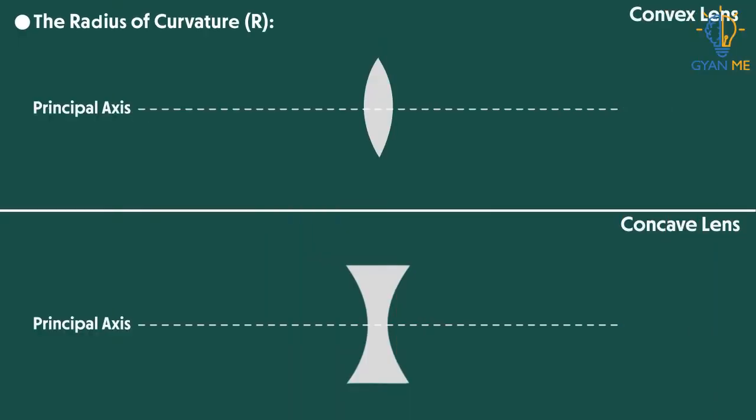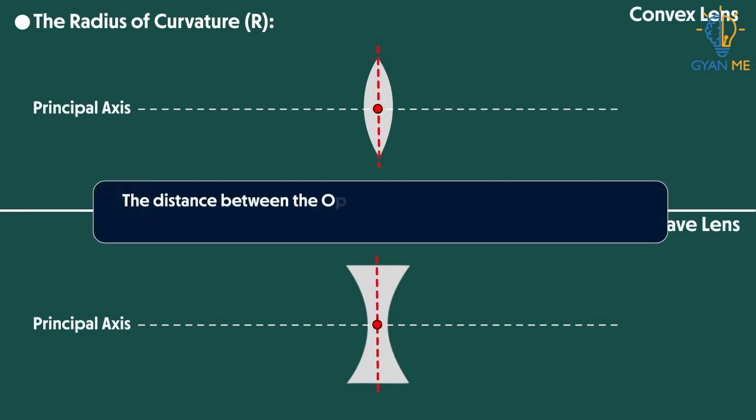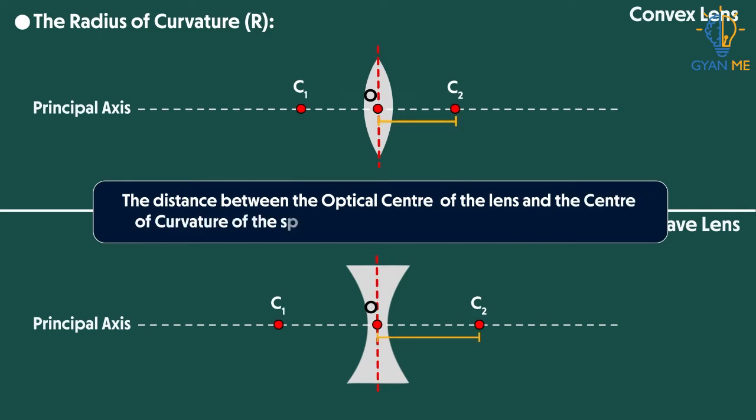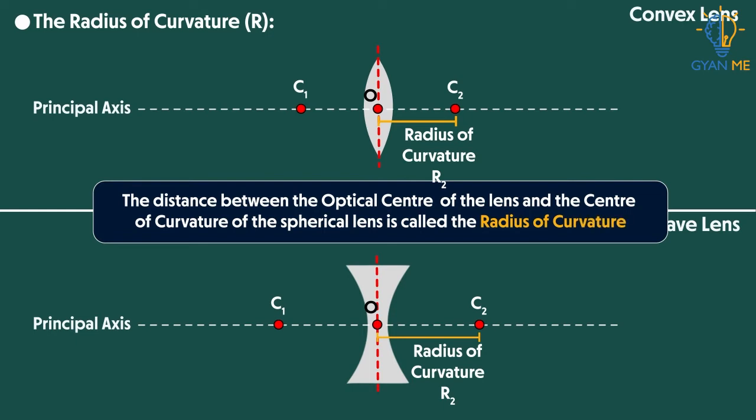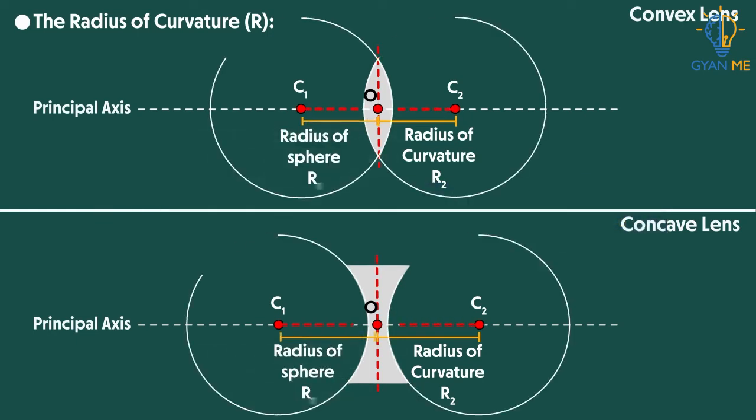So the next term is radius of curvature R. The distance between the optical center of the lens and center of curvature of the spherical lens is called the radius of curvature. It is also the radius of sphere from which the lens is cut out or made.